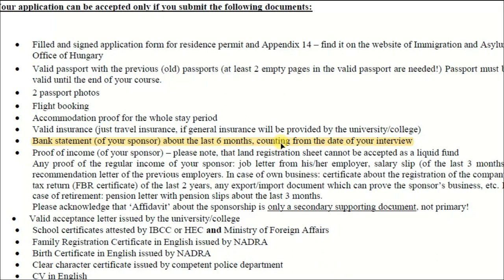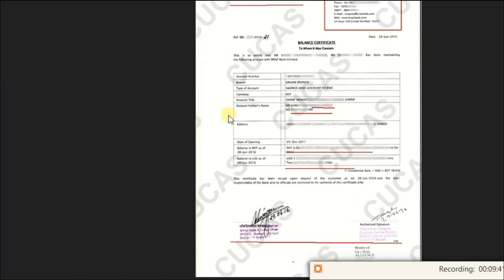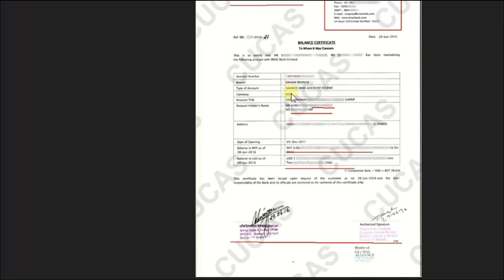Next is valid insurance. You can get it from any insurance agency for at least one month. There is no need to make your insurance for more than one month, because once you arrive you have to apply for almost two-year insurance. So for the initial condition, you just have to get it for one month.